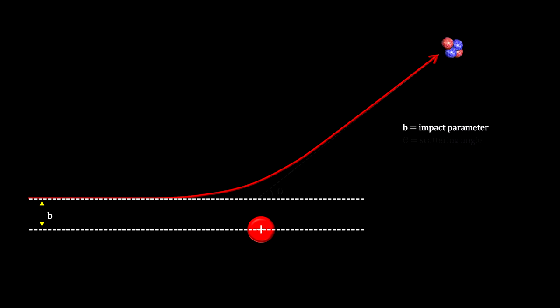Here we have an alpha particle trajectory with an impact parameter B that scatters at the angle theta and reaches a closest distance labeled D.